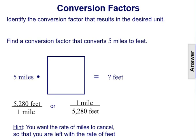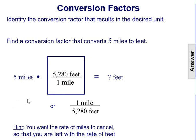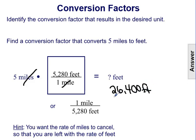Another example: converting five miles to feet. We want the miles to cancel using the conversion factor, so we use 5,280 feet per mile, with miles in the denominator. That cancels out the miles, and multiplying 5 times 5,280 leaves us with 26,400 feet as our desired unit.